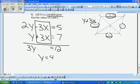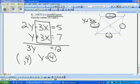So now we have our y value is 4, and we want to find our x value. So we take this and put it into either equation. We're going to use the second equation, y minus 3x equals 7. We're going to put the 4 in for y.